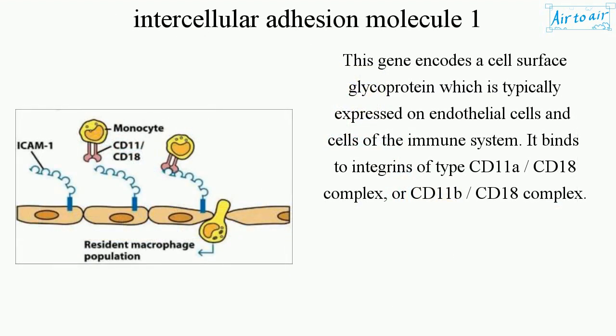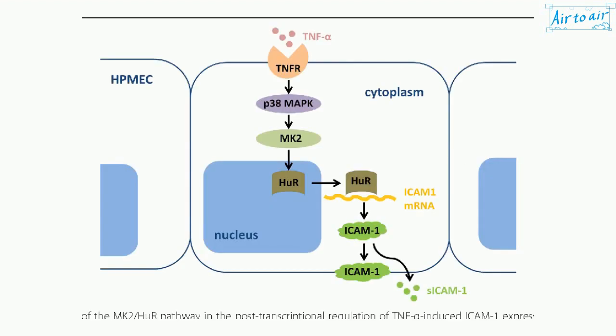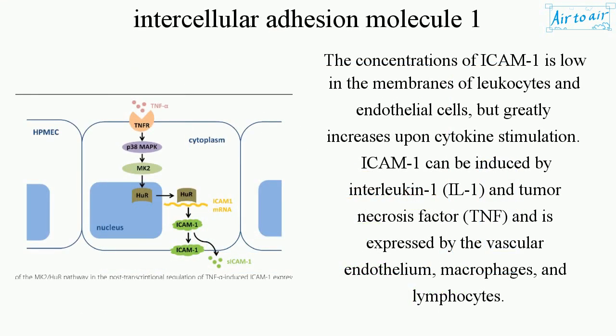This gene encodes a cell surface glycoprotein which is typically expressed on endothelial cells and cells of the immune system. It binds to integrins of type CD11A/CD18 complex or CD11B/CD18 complex. The concentration of ICAM-1 is low in the membranes of leukocytes and endothelial cells, but greatly increases upon cytokine stimulation.